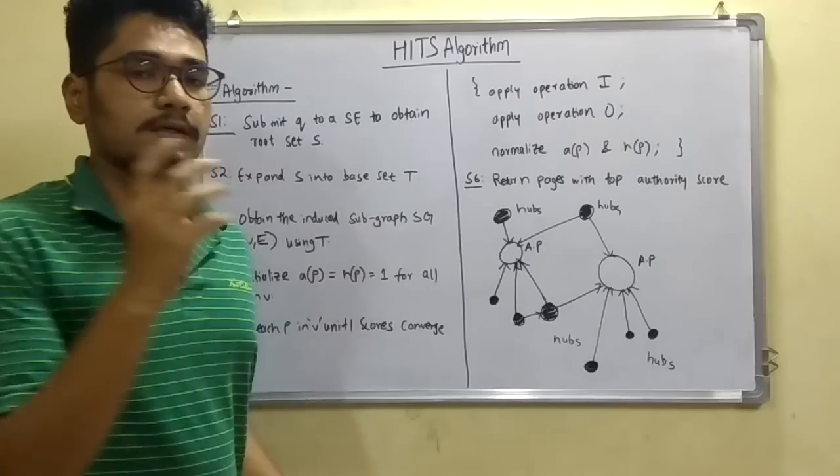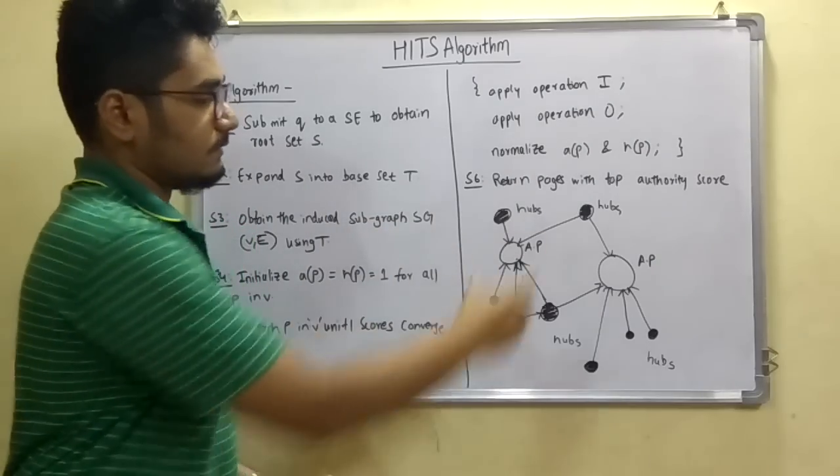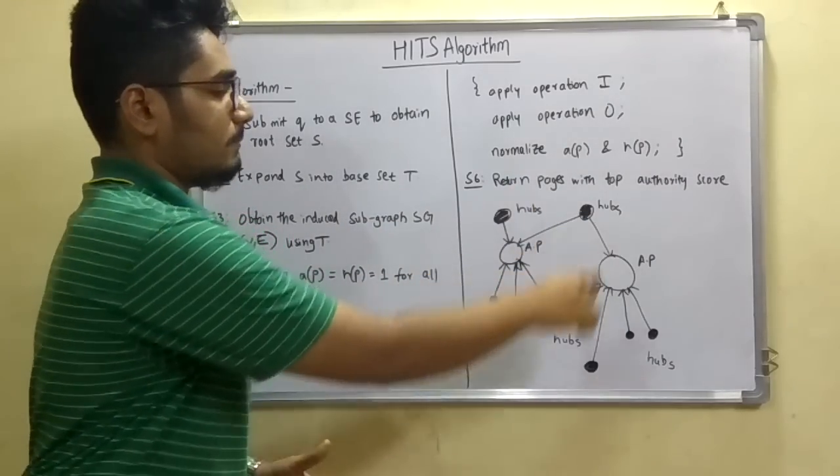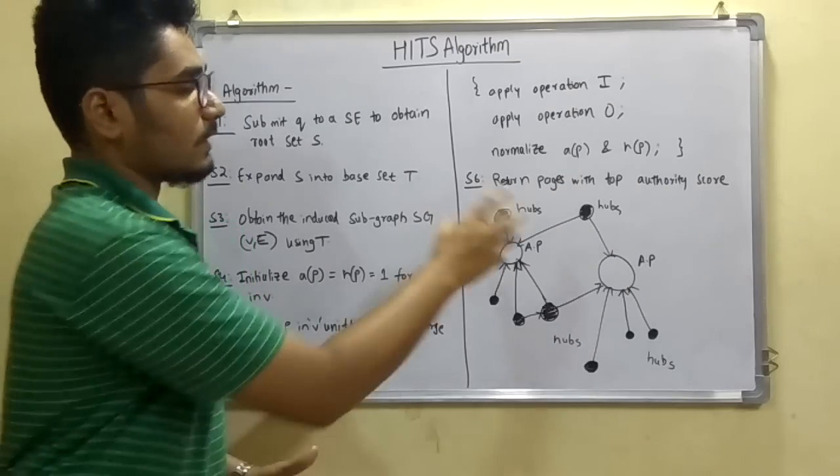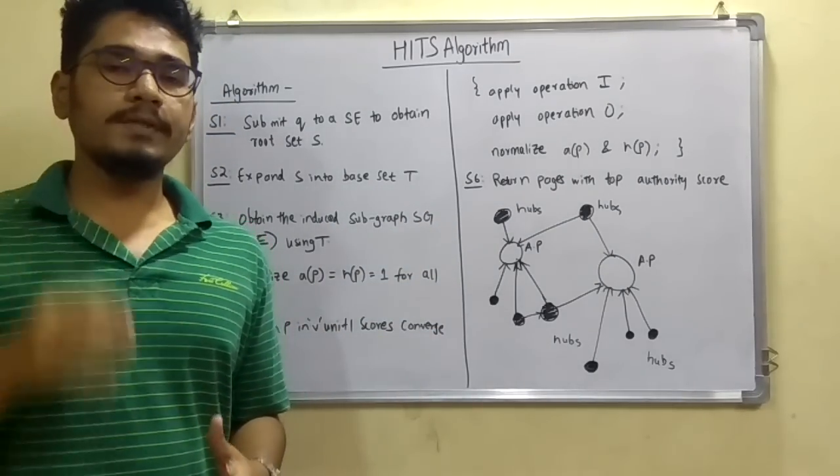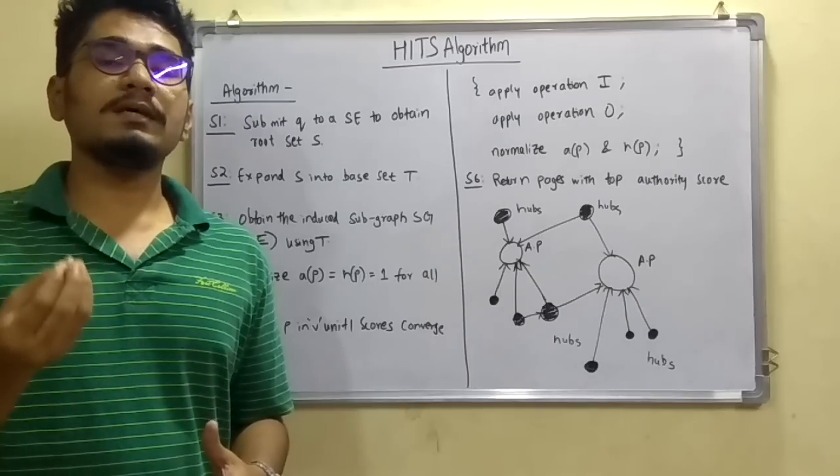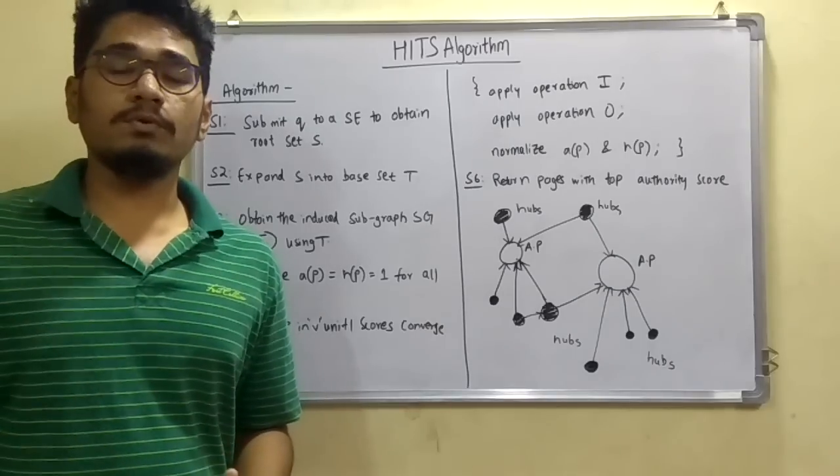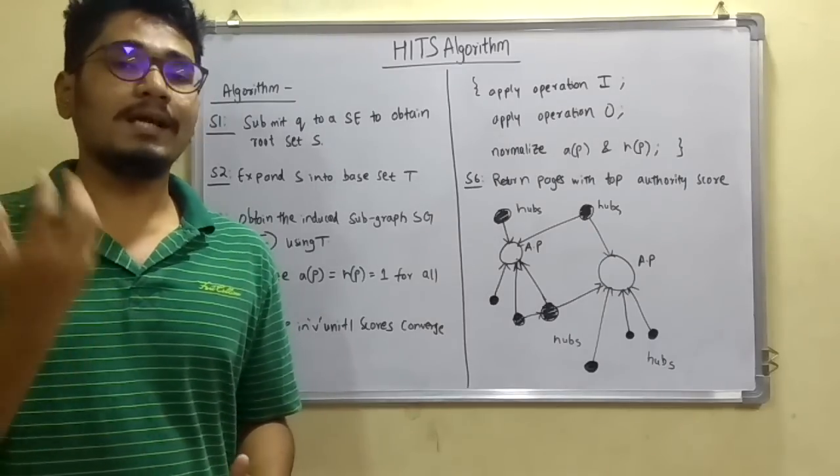there are certain vertices which are represented as AP. AP is the authority page and these black vertices are called the hubs. The authority pages are the informative sources, the links from where we can download or collect the information.